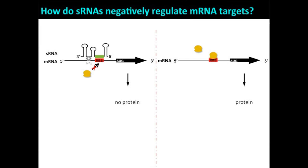In E. coli, small RNAs typically work like this: they are non-coding RNAs that work by pairing with an mRNA target, like microRNAs in eukaryotic systems. The small RNA is produced, folds into some structure, but has a region that can land on and base pair with the ribosome binding site of its target. When it does that, it forms a duplex, so ribosomes can't access the ribosome binding site and no protein is made. When the small RNA is absent, the ribosomes bind and you get protein.